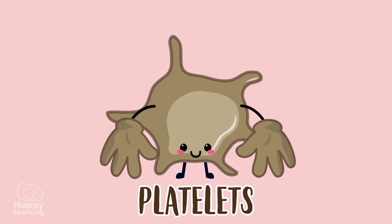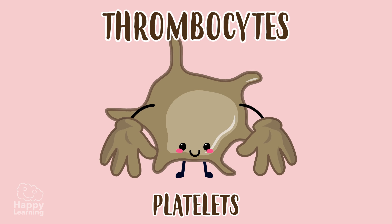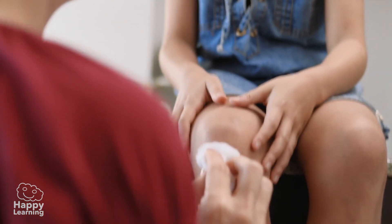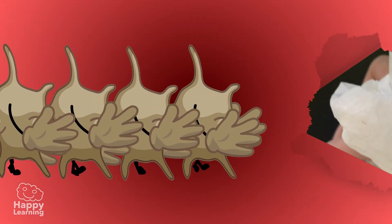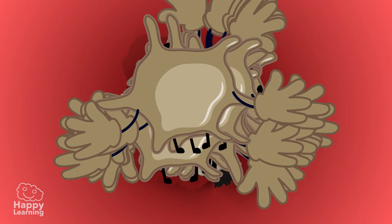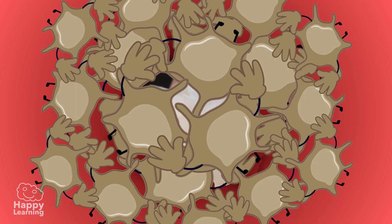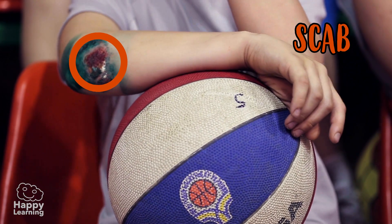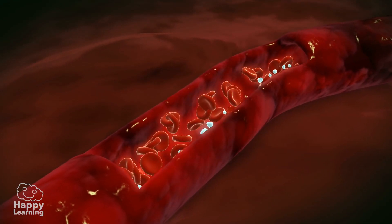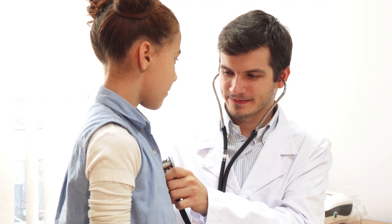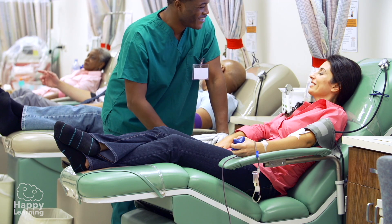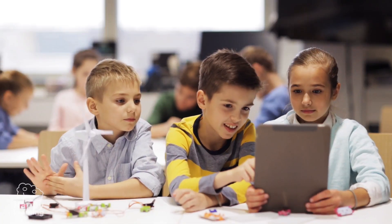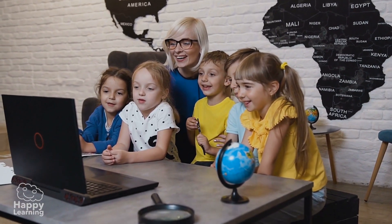Platelets, also called thrombocytes, help the blood to clot. When we have a wound, the platelets move quickly to create a kind of plug or glue in the wound so that no more blood comes out — they form a scab. Isn't blood and the whole human body just amazing? If you want to know more about blood, the circulatory system, and learn many more things, subscribe to our website at happylearning.tv.